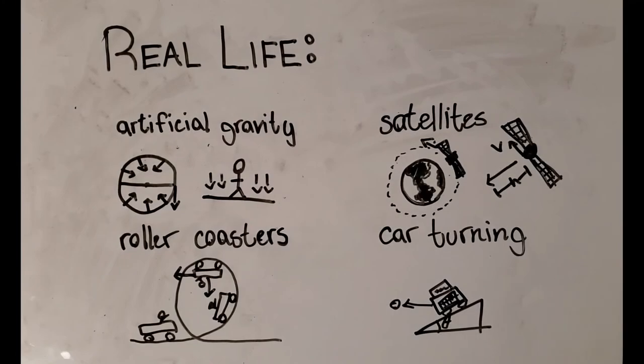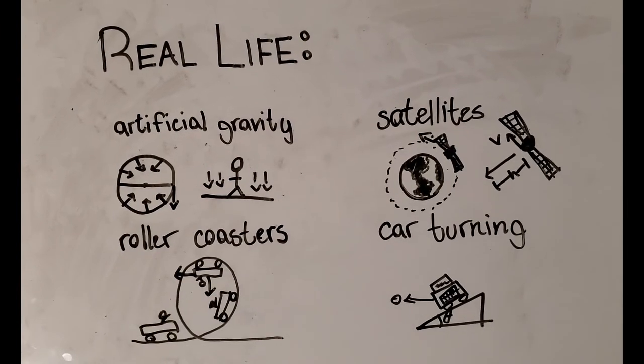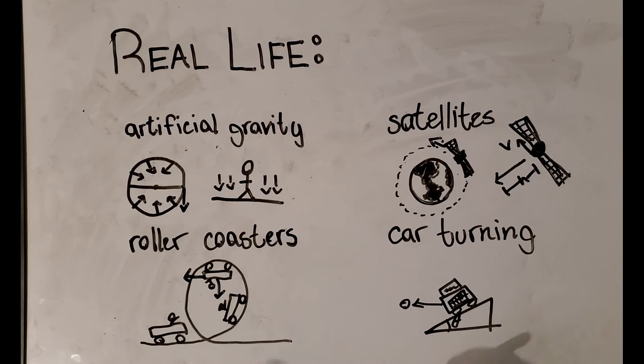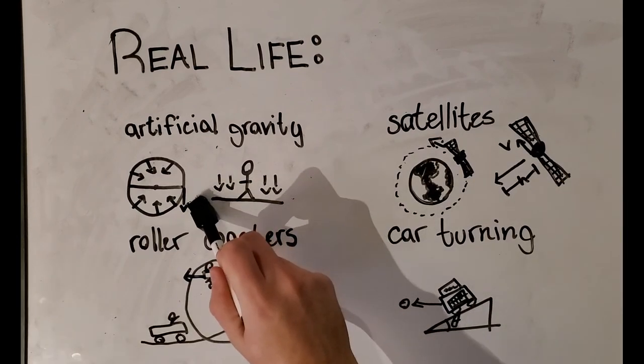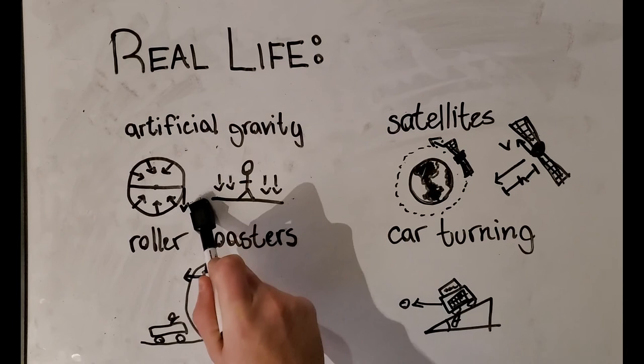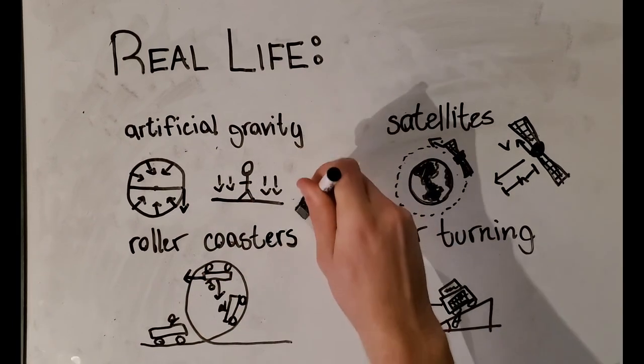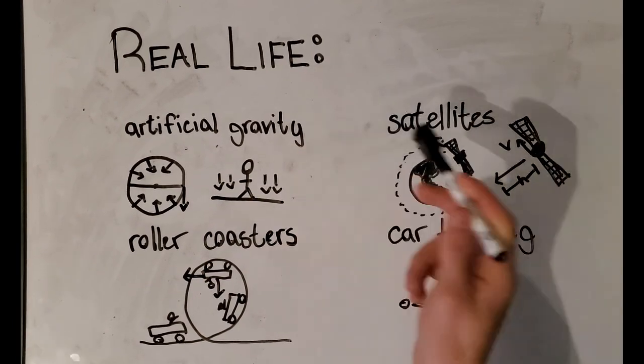You're probably wondering what are some real-life applications. Where do we see centripetal force and circular motion in the real world? A couple of examples: the first example would be artificial gravity. On the International Space Station, they can simulate the effects of Earth's gravity by making the outside of the space station spin at a certain velocity so that there's a pull downwards keeping you on the surface.